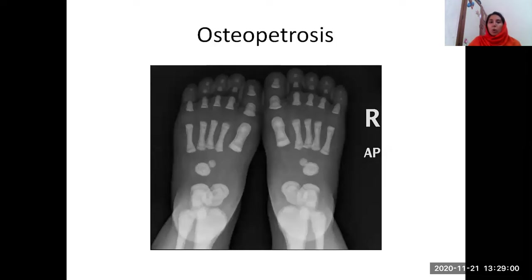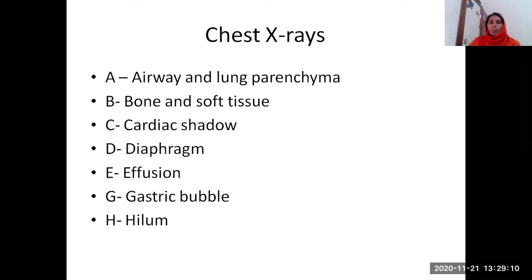This is osteopetrosis, where the bones appear very dense. This is a condition in which the bones appear more dense, but they are brittle actually.